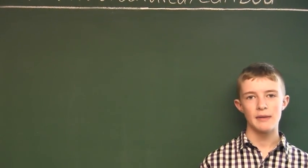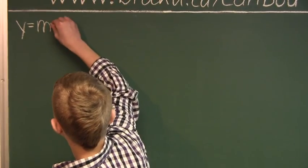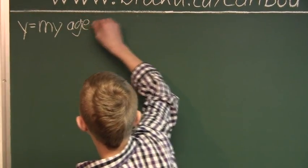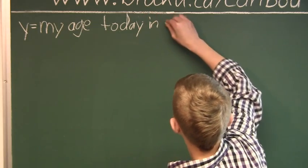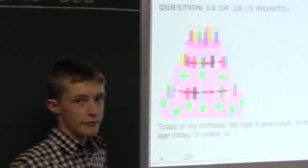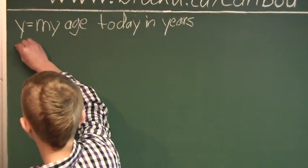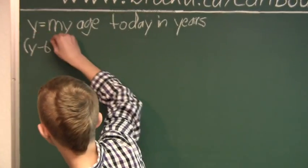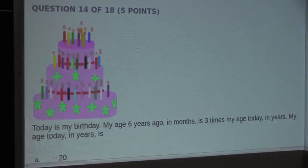So, let Y stand for my age today in years. That would be Y minus 6. And then, in months, it would have to be times 12 because each year has 12 months. So, this would have to go in brackets.